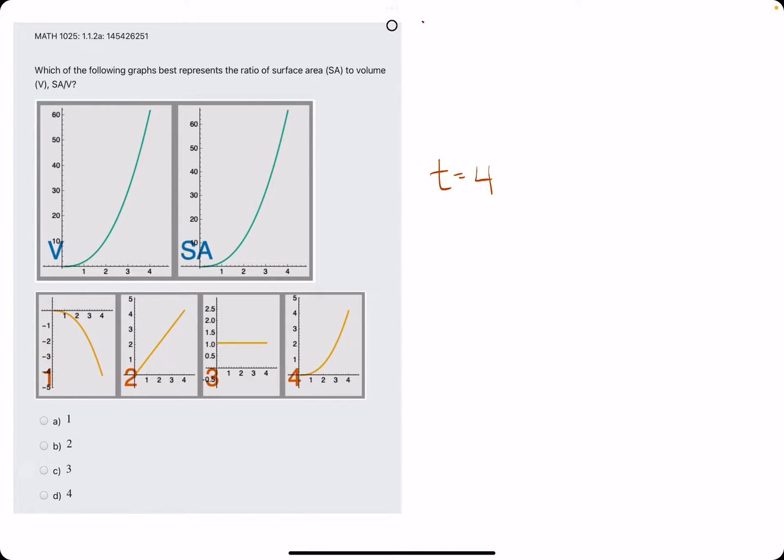For these, what I like to do is pick a time of 4, so t equals 4. And what we'll find is the surface area value and the volume value in order to find the ratio value surface area over volume at time 4.